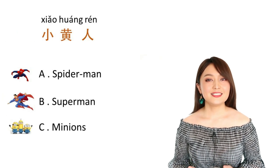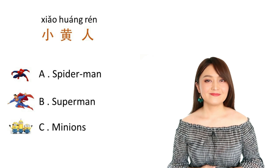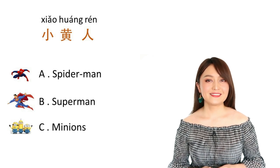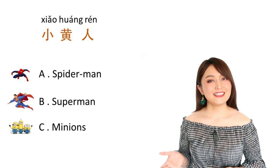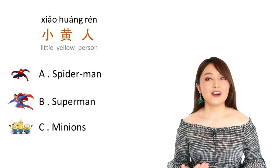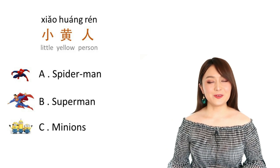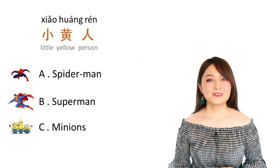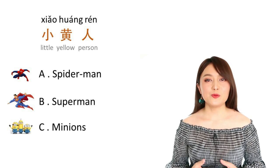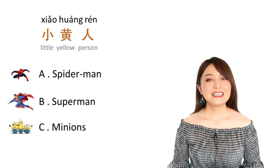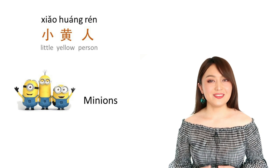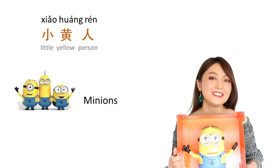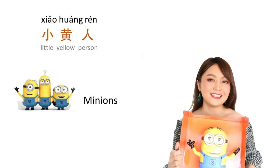下一个，小黄人。 是哪一个？ 小 is little, 黄 is yellow, 人 — person or people. That's right, they're the Minions — little yellow people. 小黄人。